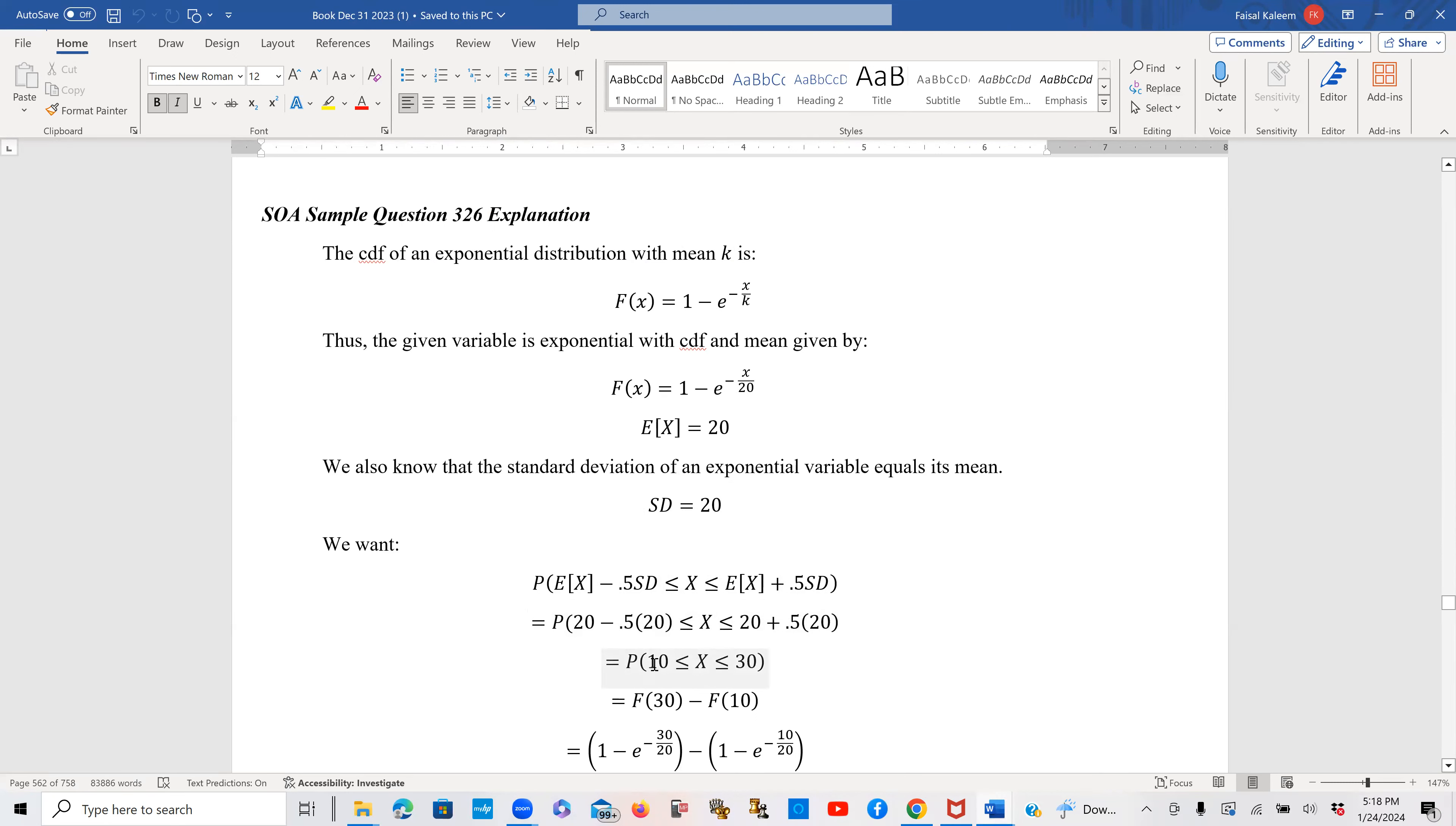So x has to be between 10 and this other one be mean plus 0.5 standard deviation. So that comes out to be 30. So x needs to be between 10 and 30. So we need the probability that x is between 10 and 30.